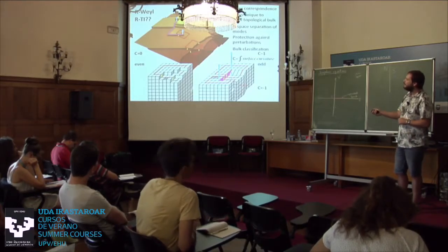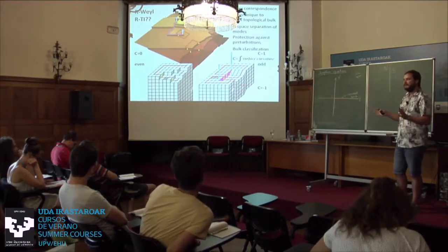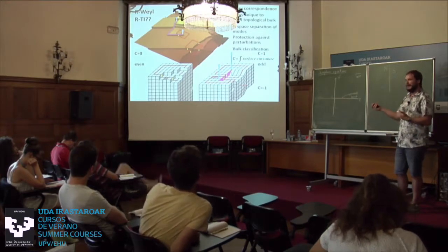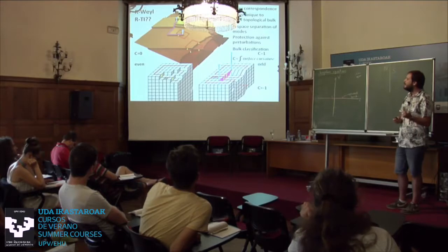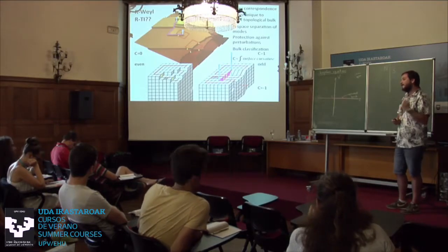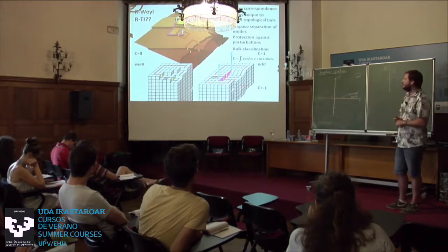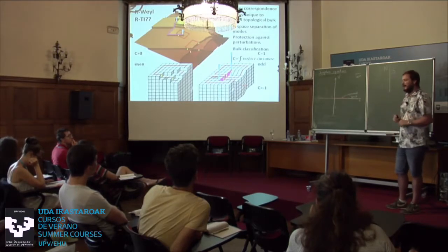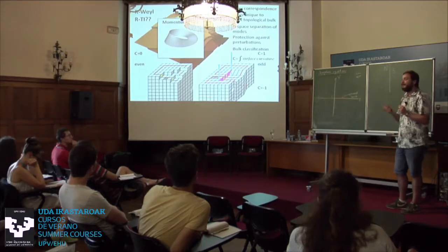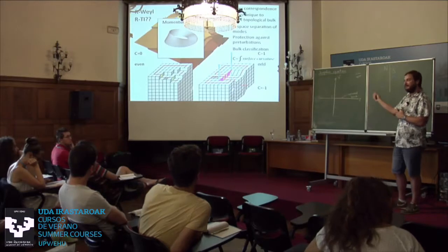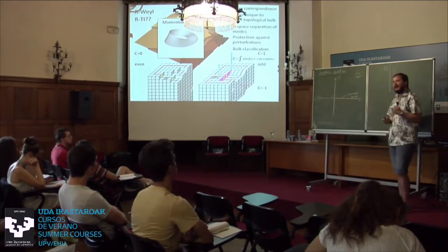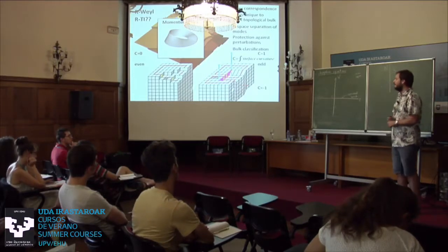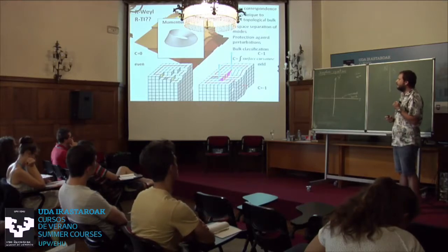We can draw from this that we already measured topology by STM via local topography. What happened starting 30 years ago and gained momentum 10 years ago with the introduction of the broader topological classification, is that we understood how to transfer this real-space classification to momentum space — how to find topological twists in momentum space, which poses some challenges.